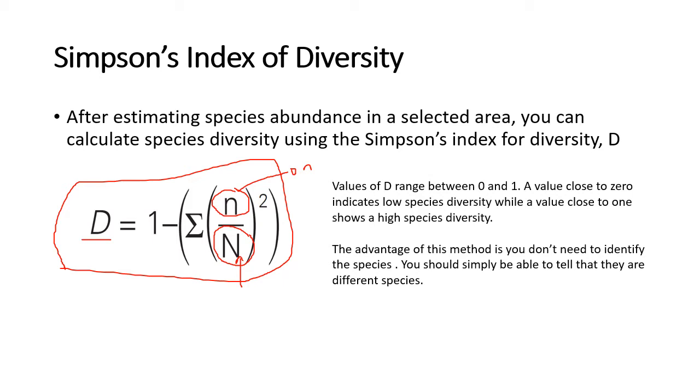I also want to say that in some cases you might be given two different populations or two different regions and you're told to calculate or to compare their species diversity. I just want to say that in such a case the one with the higher value is the one that has the highest species diversity. So if for example one of your calculations shows 0.6 and the other one shows 0.3, the one with 0.6 is the more diverse one.